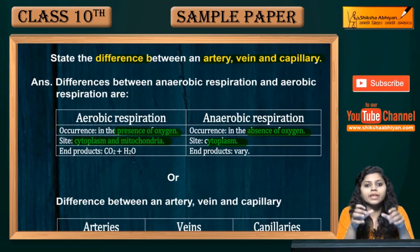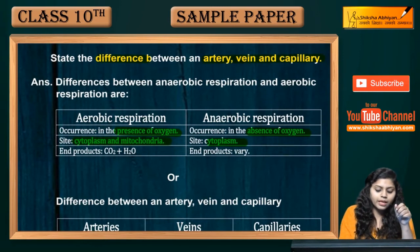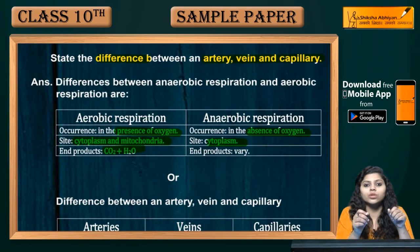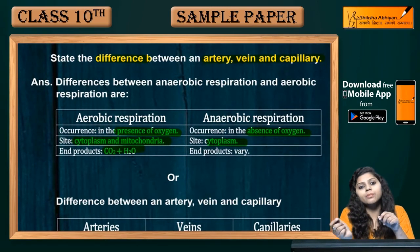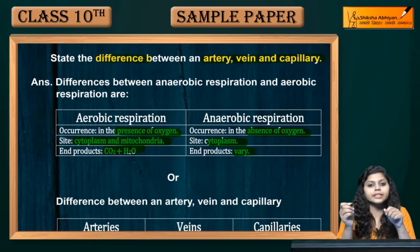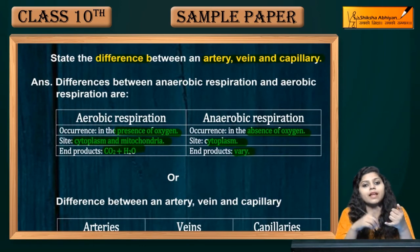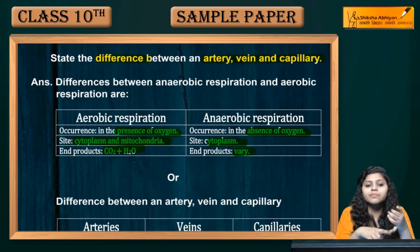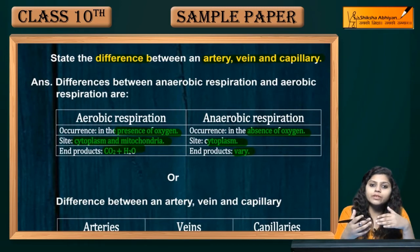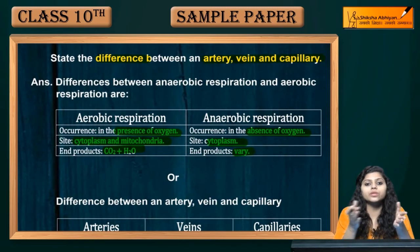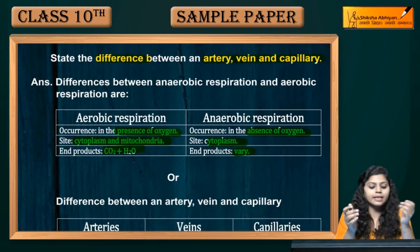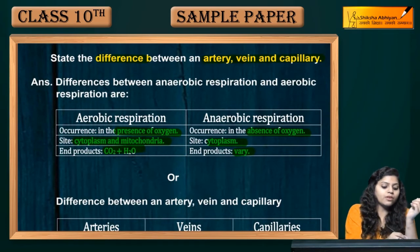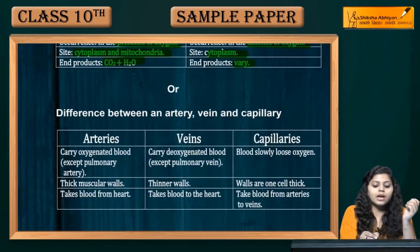Now the end products: in aerobic respiration, the end products are carbon dioxide and water. In anaerobic respiration, the products vary — if lactic acid fermentation occurs, lactic acid is produced; if alcohol fermentation occurs, ethanol is produced.